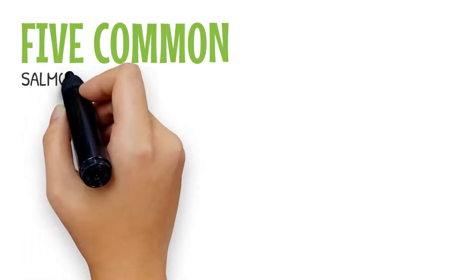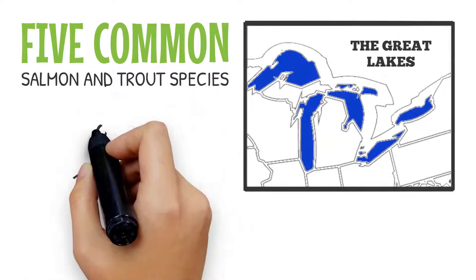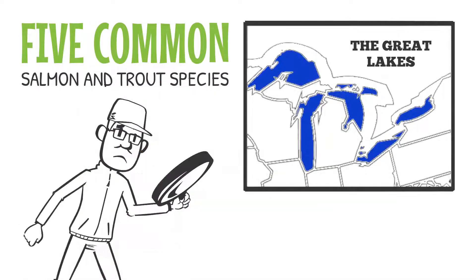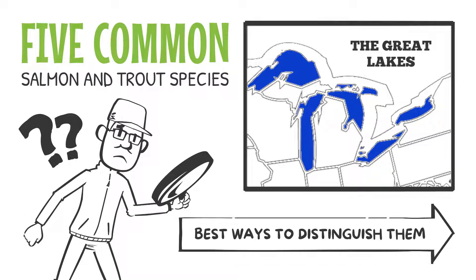We have five common salmon and trout species in the Great Lakes that can be confusing to identify. Let's look at the best ways to distinguish them.